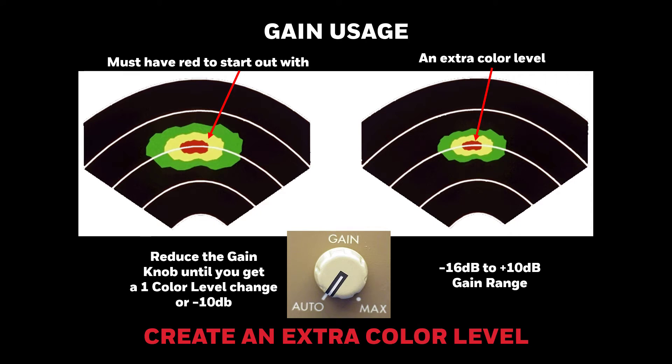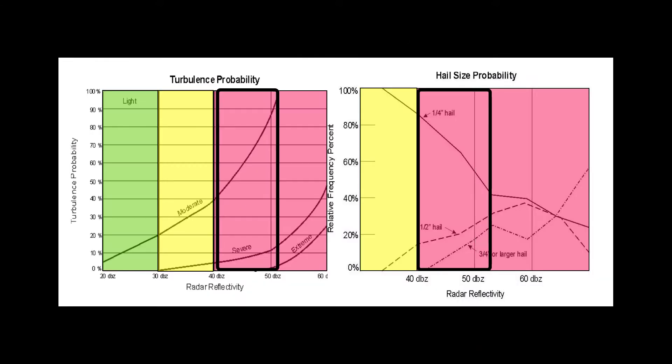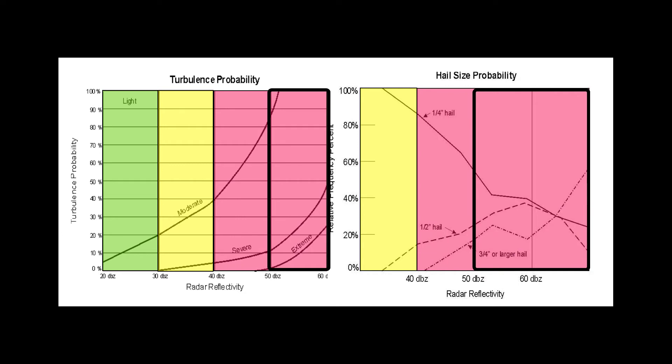The system has a gain range of minus 16 dB to plus 10 dB. If you reduce the gain until red turns to yellow, yellow turns to green, and the green disappears, you've just reduced the gain 10 dB, and you know any red remaining is at least 50 dBZ. This lets you know that you're dealing with a more dangerous cell. Note that you need red reflectivity to start out with for this to work.